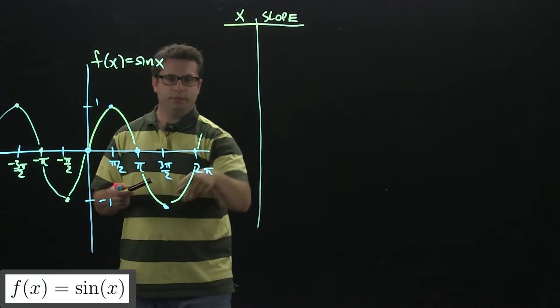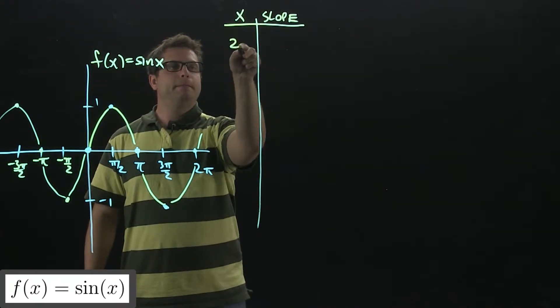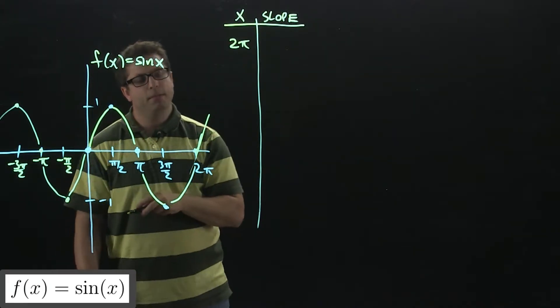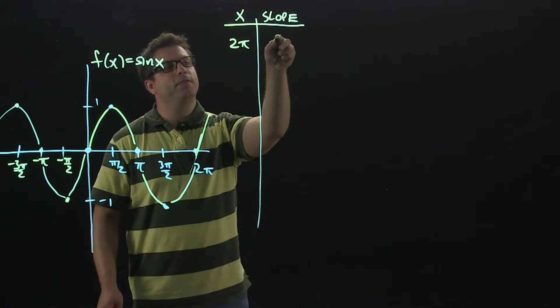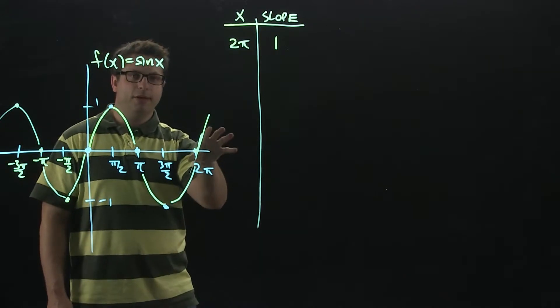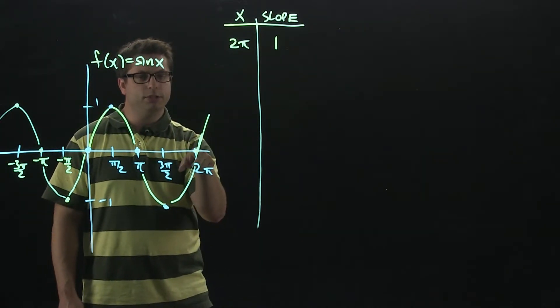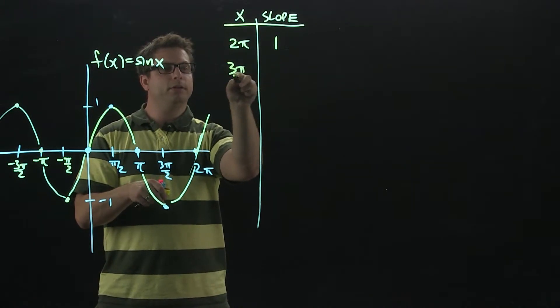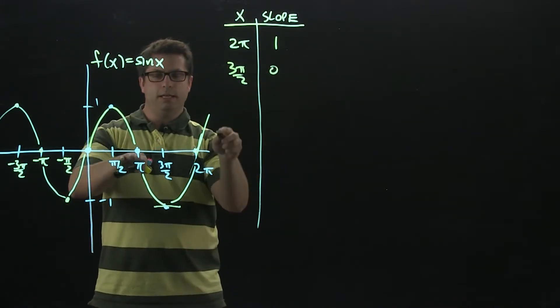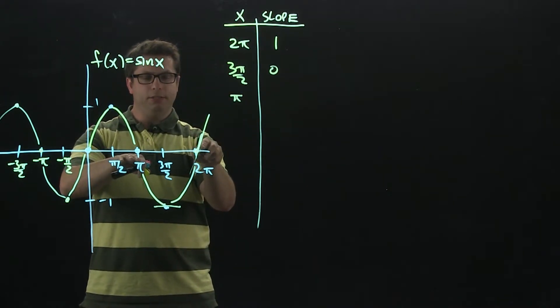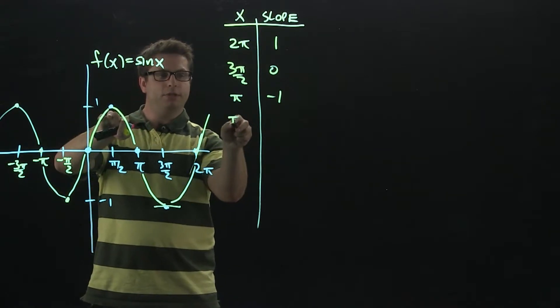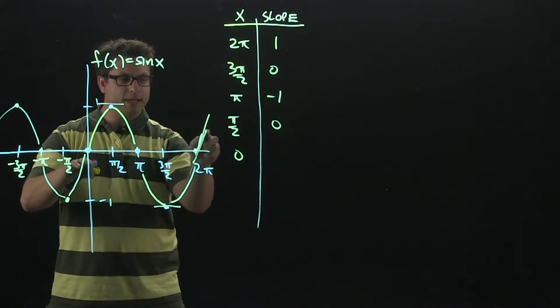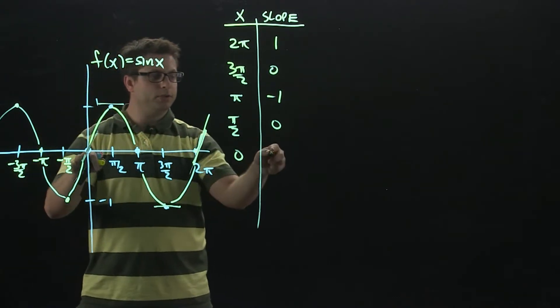We'll start at 2 pi. The slope would be the same as the slope of the tangent line at 2 pi. You may have to take my word for it that it is 1. You can confirm it by doing a table of values on the secant lines, and as those secant lines approach the tangent line, you'll see that the slope is 1. At 3 pi over 2, the slope is 0. At pi, it mirrors 2 pi except now it's negative 1. At pi over 2, it is 0. And back at 0, this matches the slope here, which is 1.